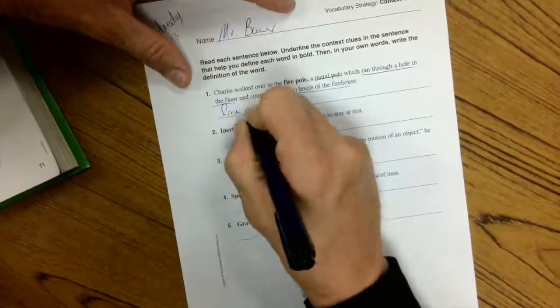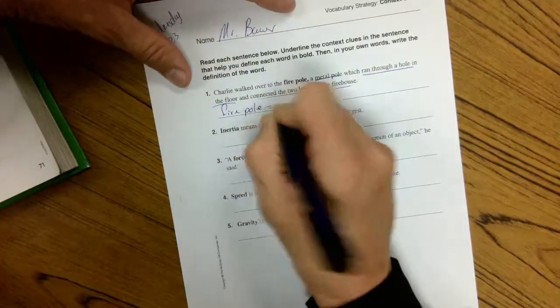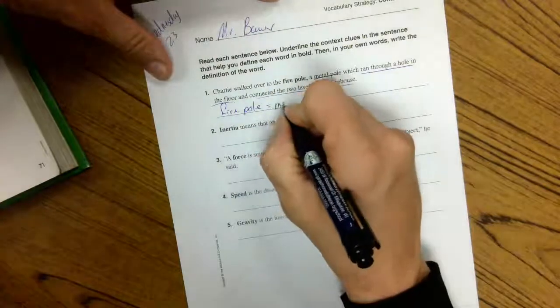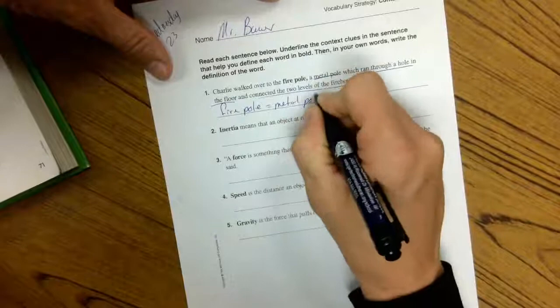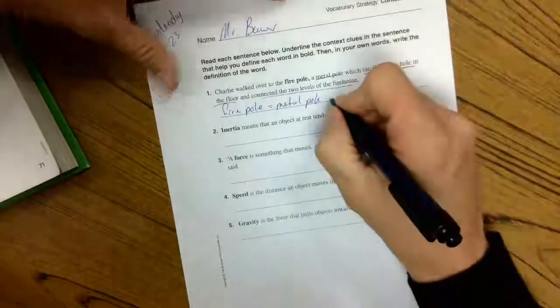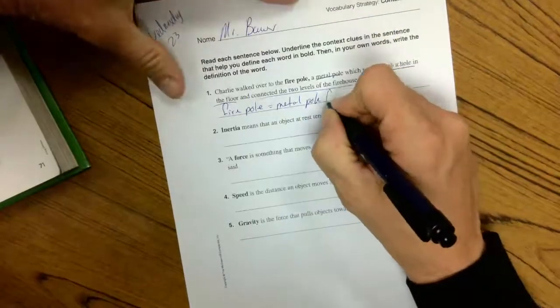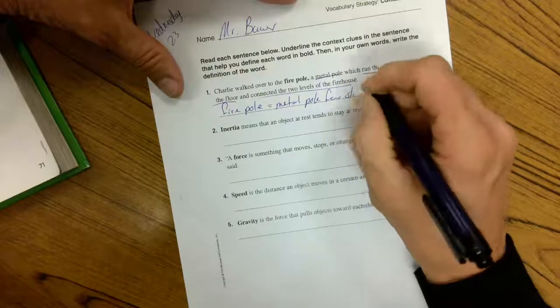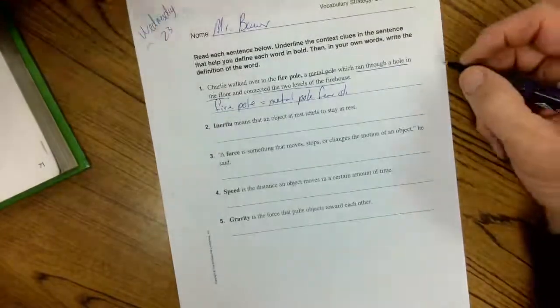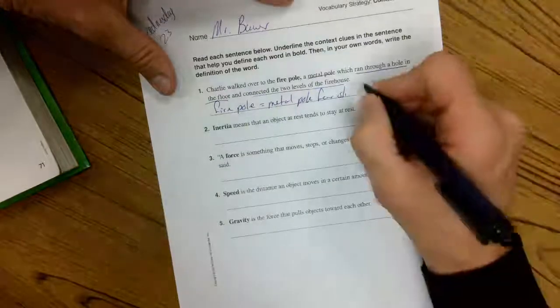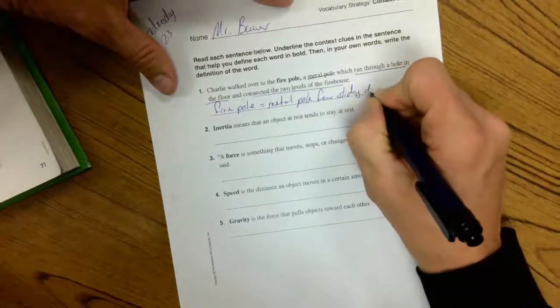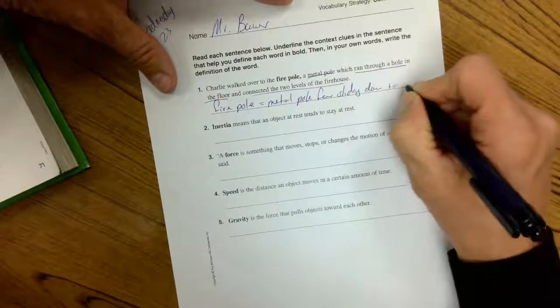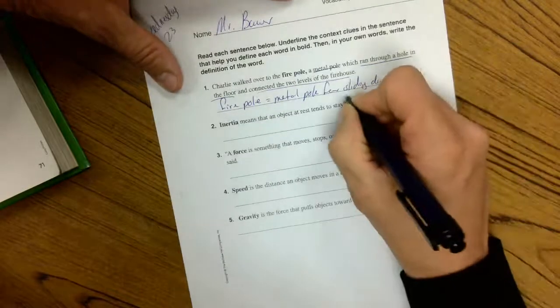So I'm going to put this fire pole here. Fire pole equals metal pole for sliding down. If you've ever seen a firefighter slide down a metal pole, of course I use some past knowledge to help me on that one. Sliding down to get downstairs.